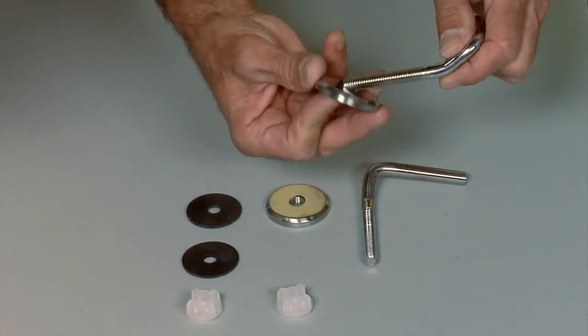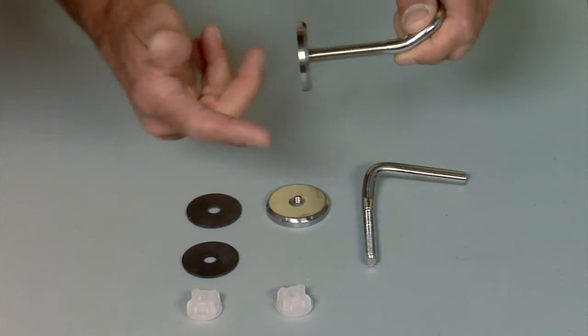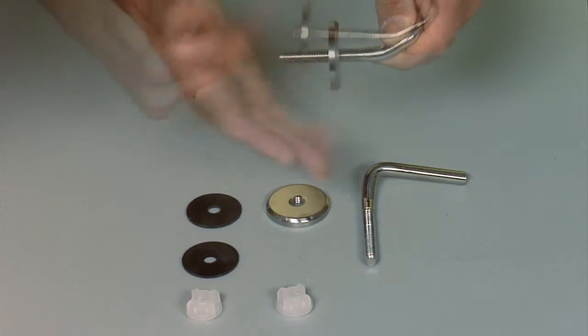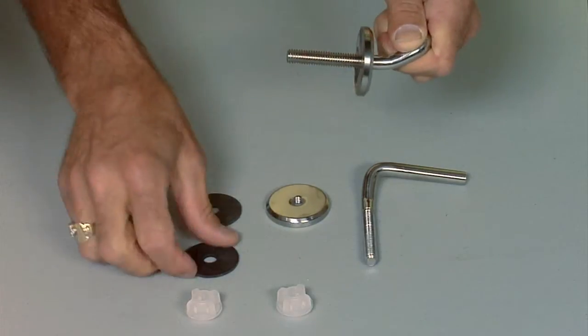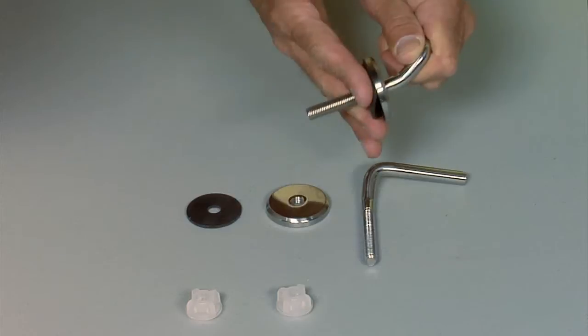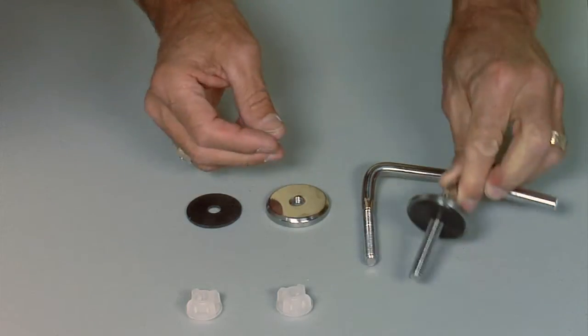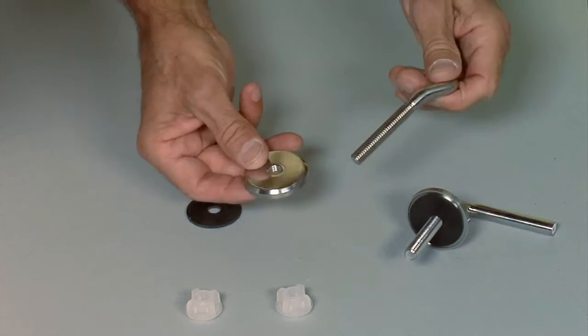Take a flange and screw it onto the hinge all the way up. Put a washer and do the same to the other side.